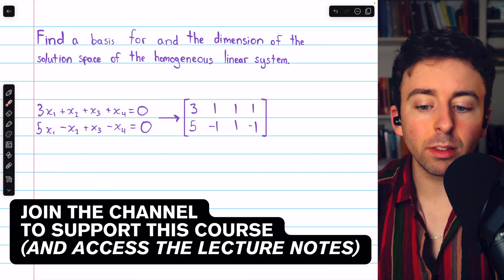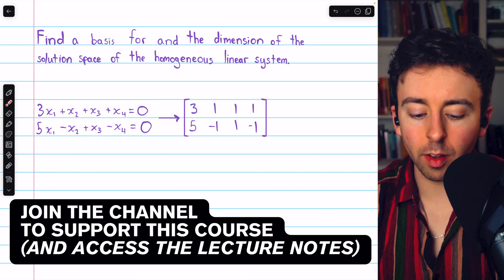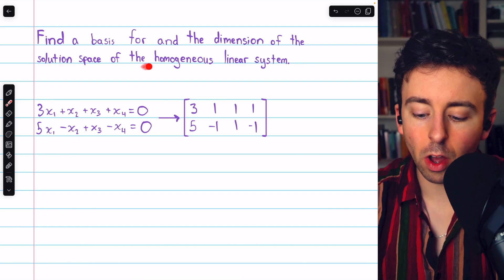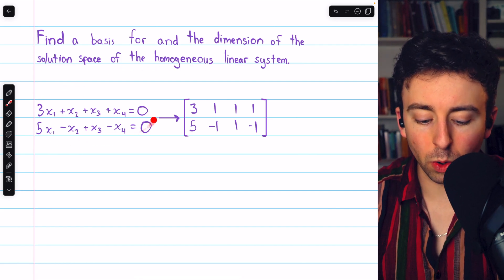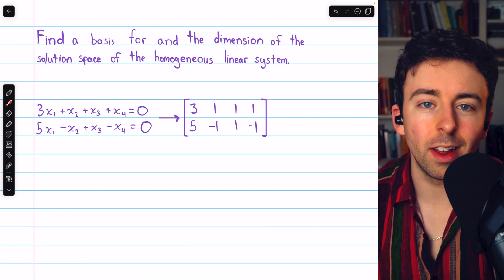Let's go over how to find a basis for and the dimension of the solution space of a homogeneous linear system. In this example, we have two equations and four unknowns.